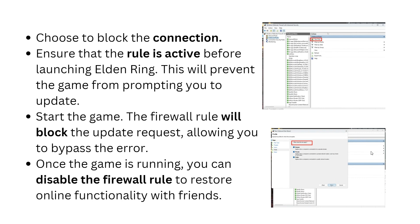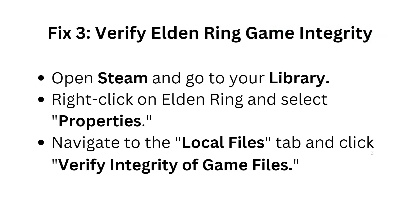Choose to block the connection and ensure that the rule is active before launching Elden Ring. This prevents the game from prompting you to update. The firewall rule will block the update request, allowing you to bypass the error. Once the game is running, you can disable the firewall rule to restore online functionality with friends.